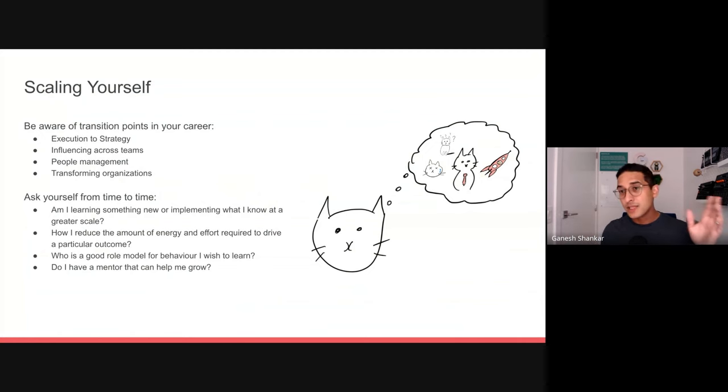The second tip I have is to create space to intentionally reflect during times of the year. At least once a year, I would say create a period of reflection. You can ask yourself the following questions. One, am I learning something new? Or am I just implementing what I already know at a greater scale? Two, how can I reduce the amount of time and energy it takes me to drive a particular outcome? And just focus on one.